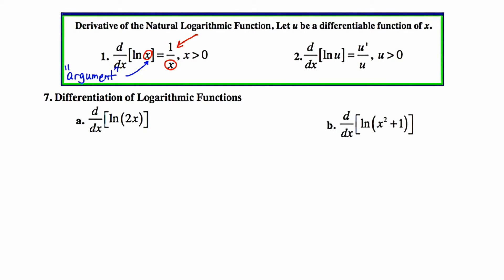We can generalize this by looking at model problem number 2, where our argument is u. u represents really any expression, and if you're taking the natural log of some expression called u, that u ends up in the denominator and the derivative of u, whatever it is, ends up in the numerator. So if the denominator is something simple, you'll have a very basic derivative on top, but u could be something more complicated, and its derivative will go in the numerator — it just depends on what u is and how complicated this fraction will end up.